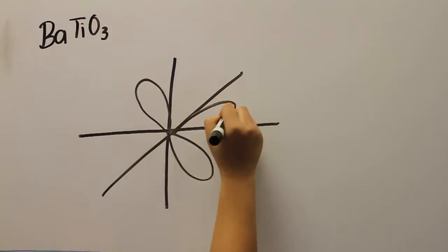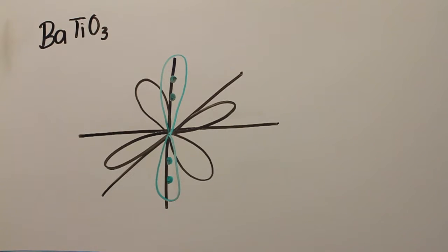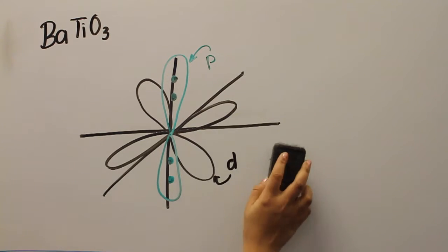In most ferro-electrics, such as barium titanium oxide, the ferro-electricity is driven by hybridization of empty d orbitals with occupied p-orbitals of the octahedrally-coordinated oxygen ions.